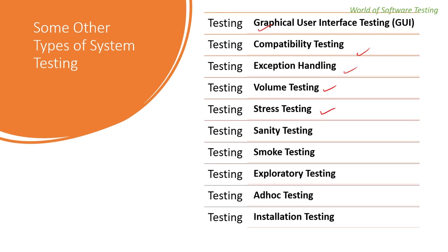Stress testing is done by increasing the number of users on an application simultaneously until the application breaks down. For example, if the application has a capacity of 1,000 users, when users are below 1,000 the application should not break. Stress testing is essentially to identify the capability of the application — to what extent it can withstand stress.